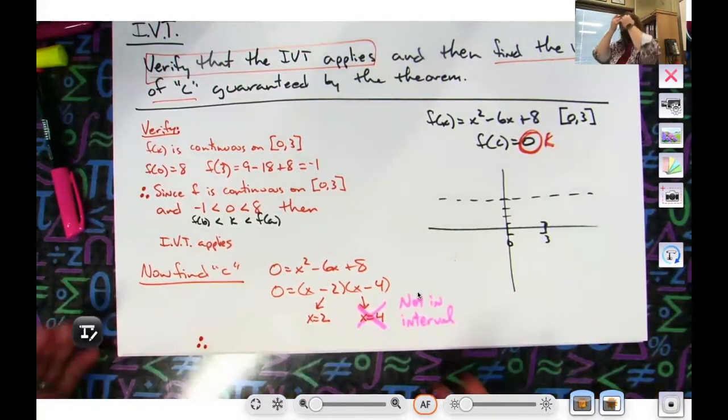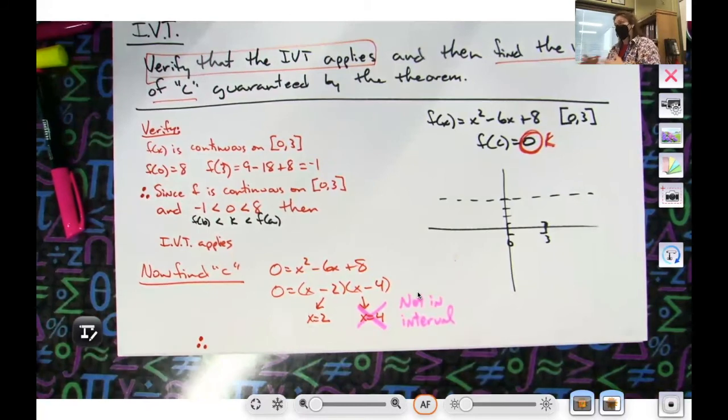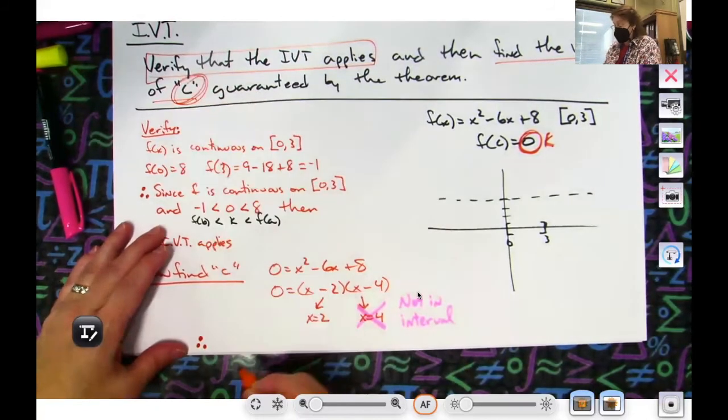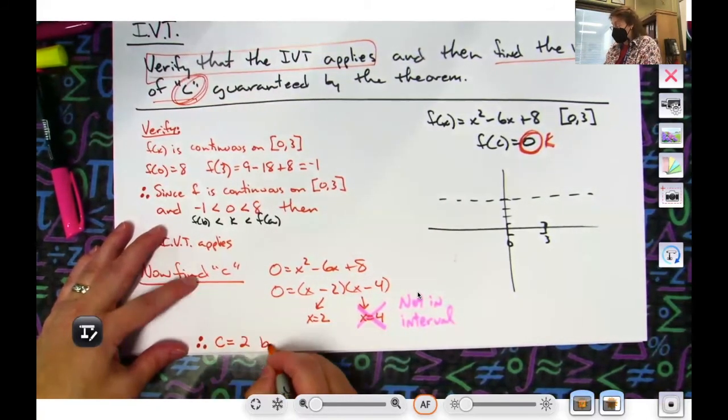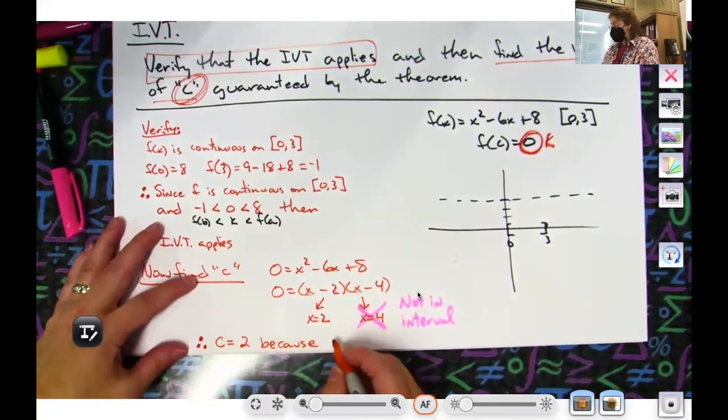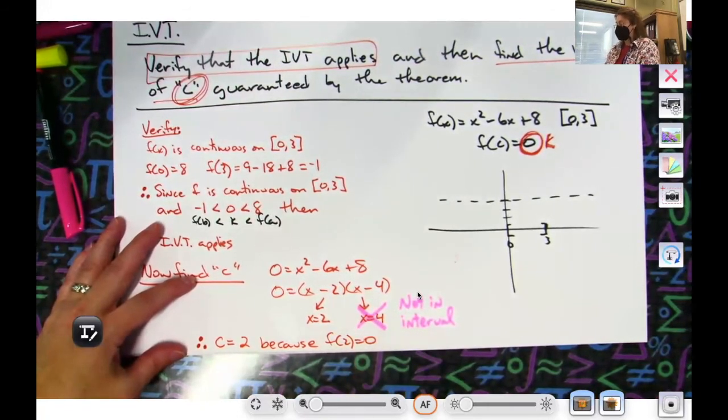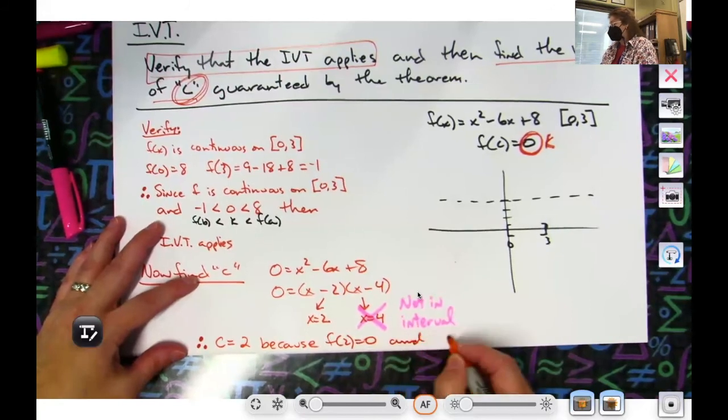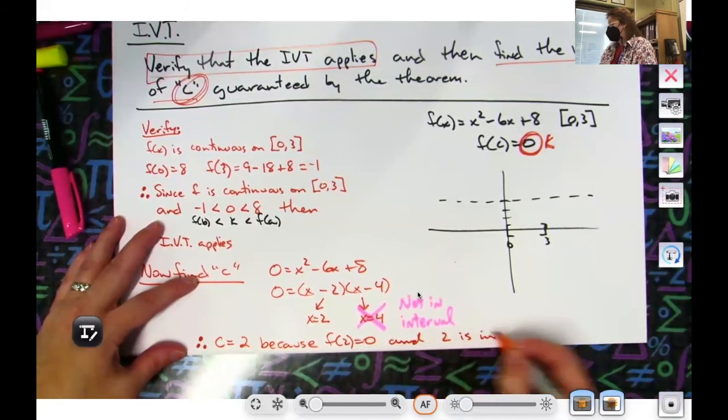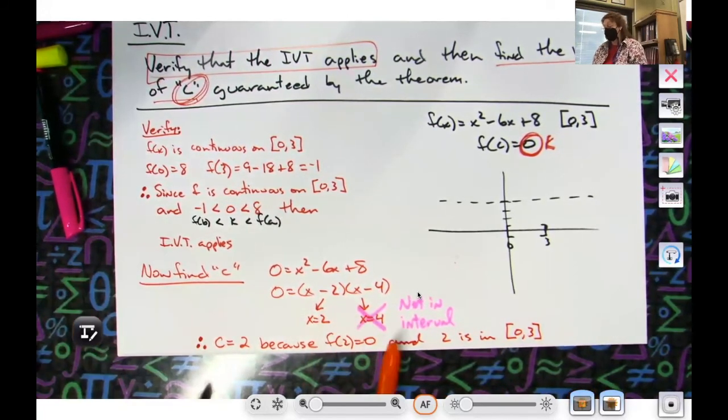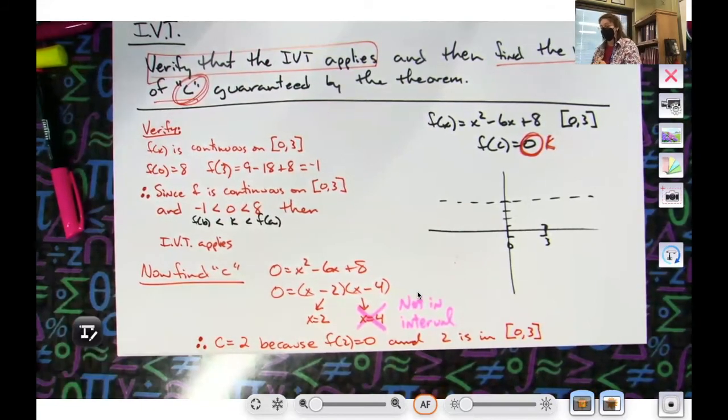Can I again draw another conclusion? I am clearly running out of room here. Therefore—and I could write really small ones or really long ones—therefore C, since they told me to find values of C, therefore C equals two. Because—and I could just do a little statement like 'because f(2) equals zero'—or I could make it a little bit better and I could say because f(2) equals zero and two is in that closed interval. Because we threw out four because it's not in the interval, so we chose two because it is in that interval.